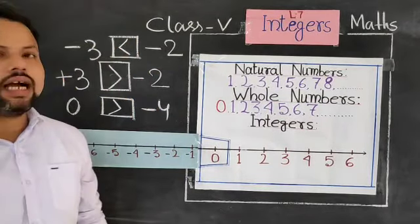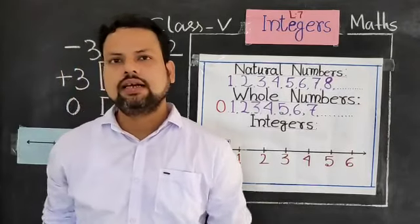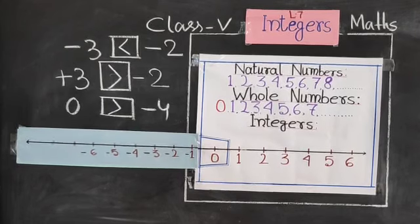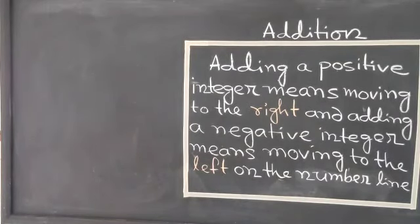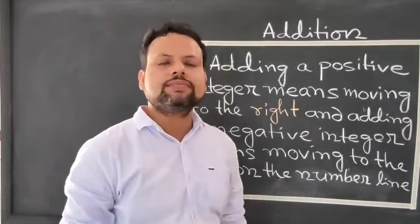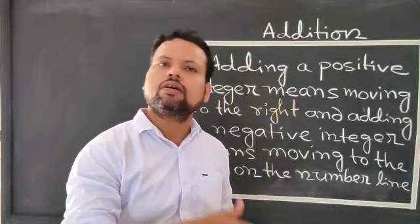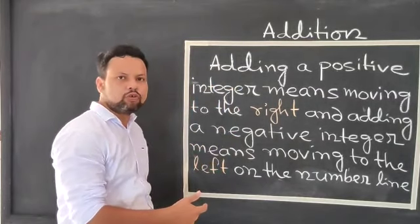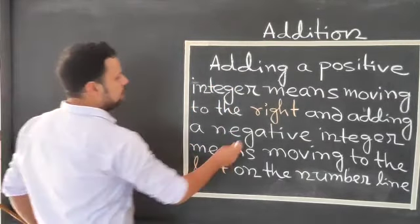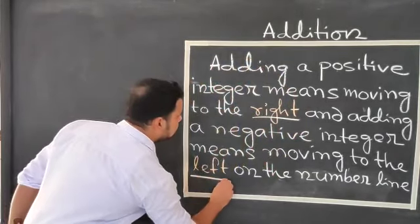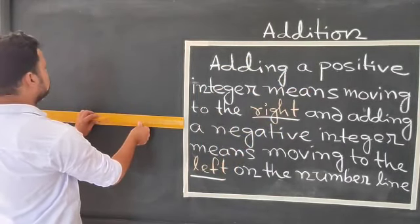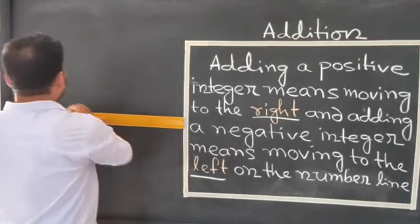Next, I will explain how to add on the number line. When we add positive integers, we move to the right side of the number line. When we add negative integers, we move to the left side of the number line. I will explain this with an example.